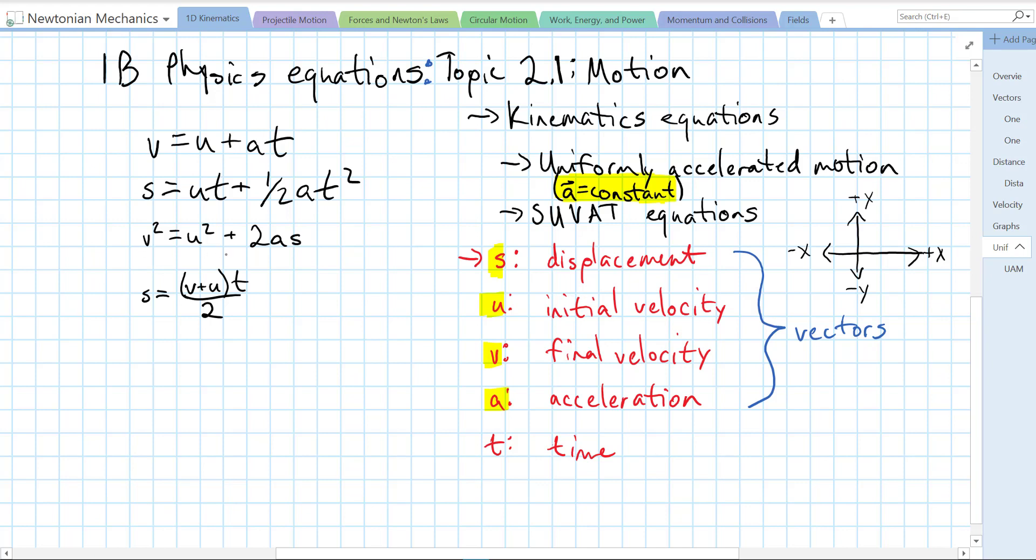V squared equals U squared plus 2AS. Final velocity squared is initial velocity squared plus 2A times displacement.